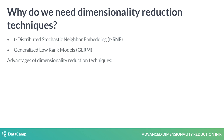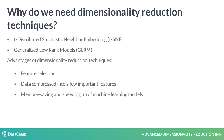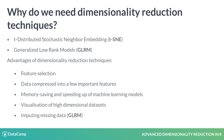Dimensionality reduction techniques are based on unsupervised machine learning algorithms, and their application offers several advantages. It provides a way of doing feature selection. It compresses high-dimensional data into a few important features, saves memory, and speeds up building machine learning models. It also allows the visualization of high-dimensional datasets, and in the case of GLRM, it also imputes missing data.